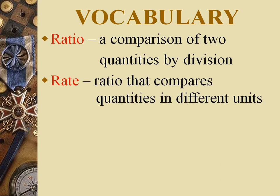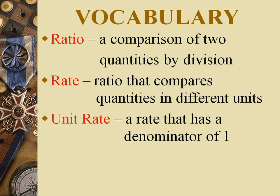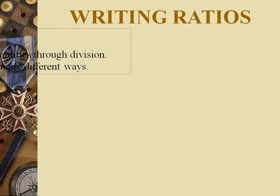Rate is basically a quantity involving a division between two different kinds of units — for example, kilometers per hour or meters per second. When we calculate a comparison between two real-life units, such as in a speed-time graph, the kilometers per hour is the ratio between distance and time. This is called a rate — a ratio that compares quantities in different units. A rate that has a denominator of one is called a unit rate.